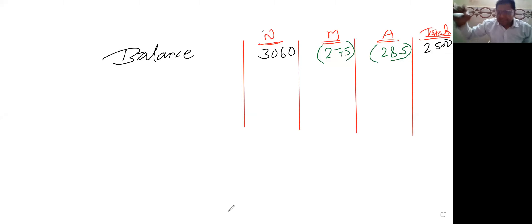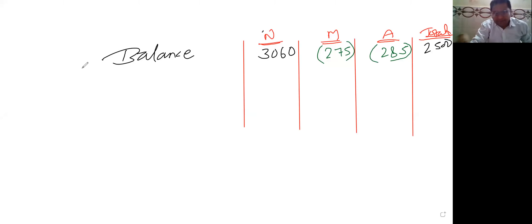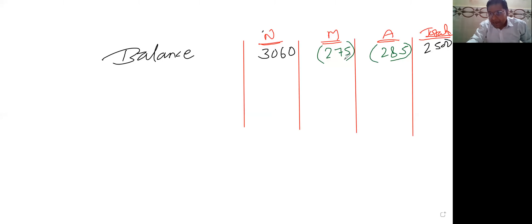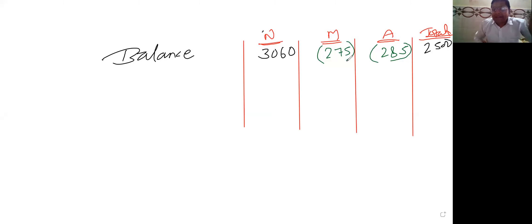सब adjust करने के बाद आपको balance आया — finally समझो कि underwriter N का आपको आया 3060, underwriter M का आया negative, मतलब credit आ गया इसका 275, और underwriter A का भी credit आ गया।